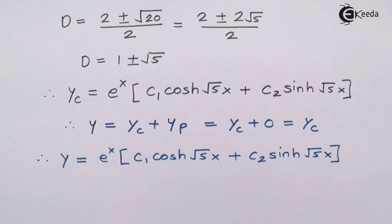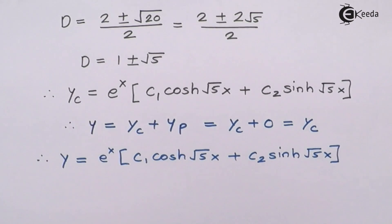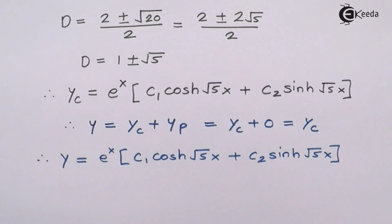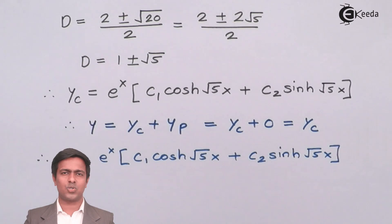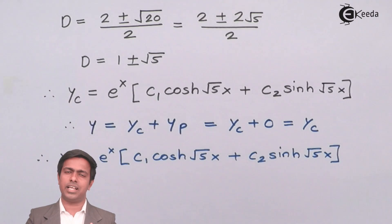This is how we find the solution of a higher order differential equation when the right-hand side is equal to 0. I am sure you understood the method, and in the coming videos I am going to cover a few more examples where the right-hand side is 0. Don't forget to subscribe to the eKIDA channel, and share this video with your friends so they can also enjoy these videos. Thank you very much — see you in the next video.